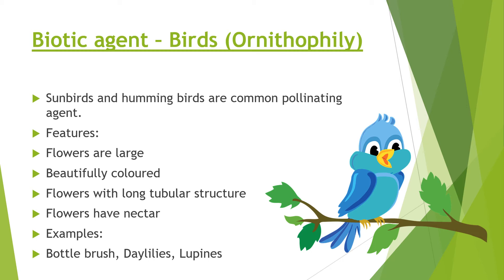Bird-pollinating plants — sunbirds and hummingbirds are the most common pollinating agents. In ornithophilous flowers, the flowers are large, they are beautifully colored, and the flowers have long tubular structures. They have nectar as a reward for the birds. The examples for ornithophilous flowers are bottle brush, Dahlia leaves, and lupines.